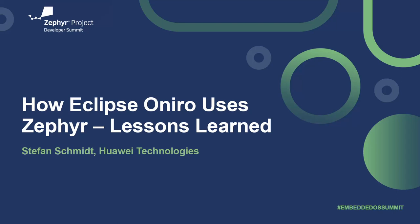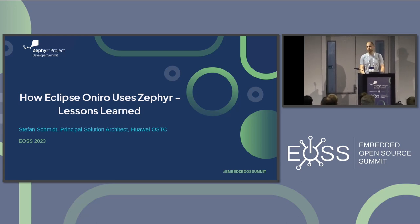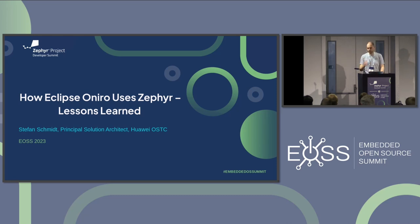Welcome everybody. My name is Stefan Schmidt. I'm working at the Huawei Open Source Technology Center. I have been working on the ONUO project for two and a half years now. I want to talk about how we are using Zephyr — how we make it part of the ONUO distribution, how we build things on top of it, how we integrate it, and how we use it from a developer perspective, how we do maintenance. We do contribute a little bit to Zephyr, but this is more the user perspective.